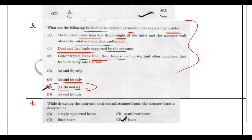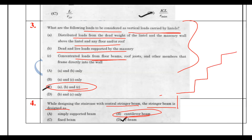While designing the staircase, the central stringer beam is designed as a cantilever — not a T-beam. The stringer beam is fixed at one end and free at the other, so the cantilever is the correct answer.